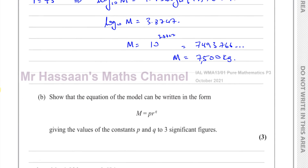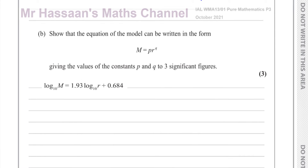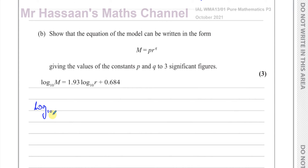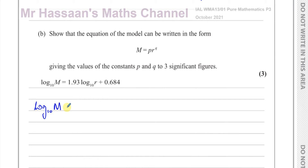Now for part b, we need to show that the equation can be written in the form m equals p times r to the power of q, giving the values of the constants p and q to three significant figures. We need to rearrange this into index form. We can bring the logarithms together — note that writing just 'log' means log base 10. We move the log r term across: log base 10 of M minus 1.93 log base 10 of r equals 0.684.